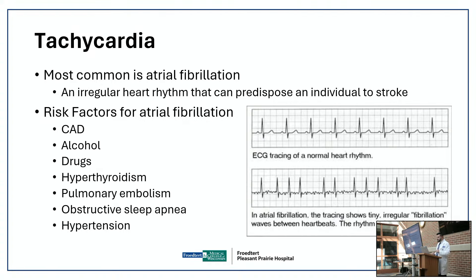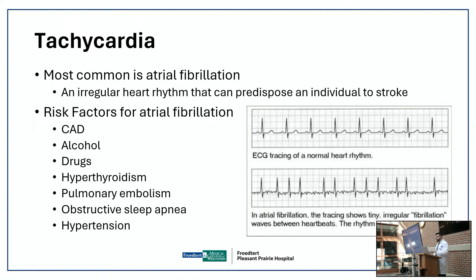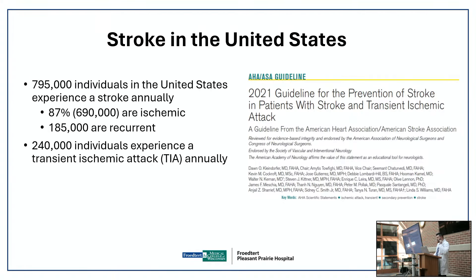Risk factors for atrial fibrillation include younger age with coronary disease, alcohol, certain drugs, hyperthyroidism, pulmonary embolism, and sleep apnea — which is underdiagnosed. Many of my atrial fibrillation patients get referred to pulmonology and sleep medicine for a sleep study; diagnosing sleep apnea and getting a CPAP can prevent atrial fibrillation or reduce its burden. Uncontrolled hypertension also causes atrial fibrillation and tachycardia.